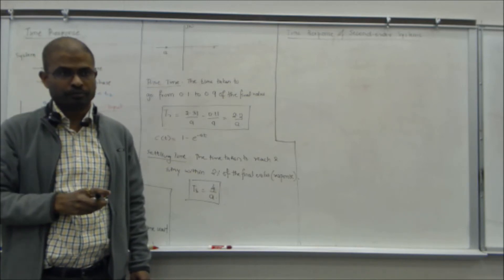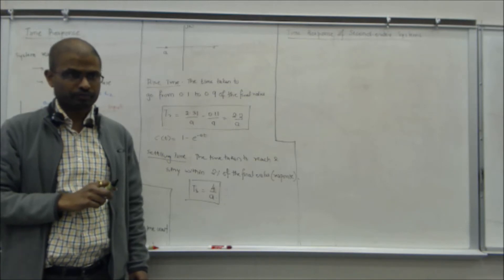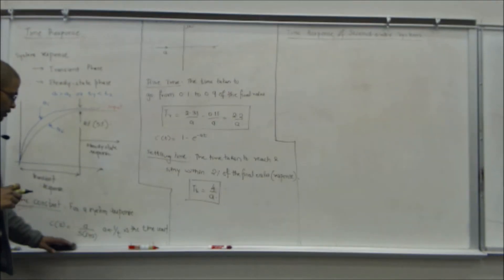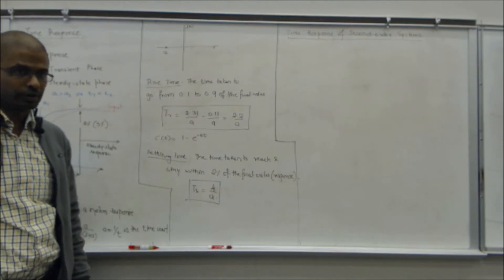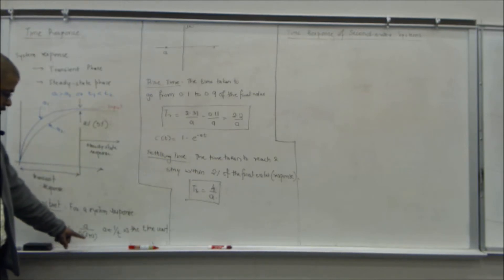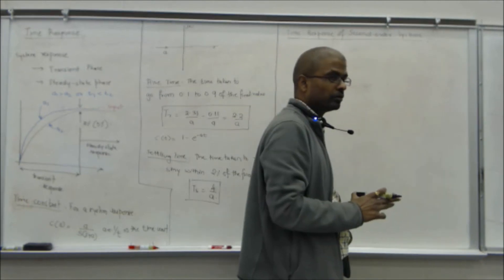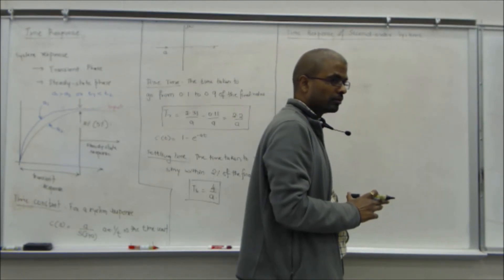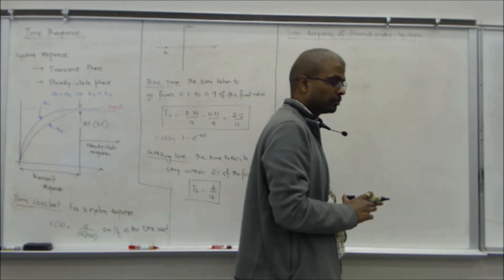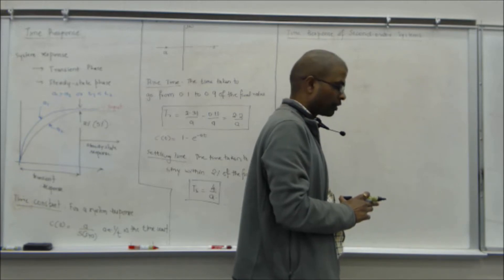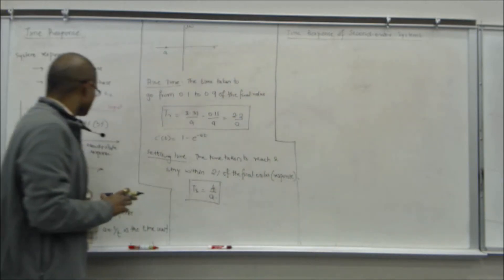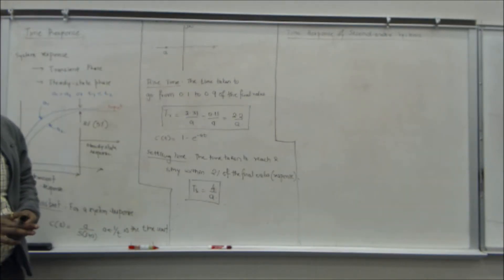If you model the system, how do you define, how does a first order system define? If the input output relationship is a first order differential equation, it's a first order system. With regards to transfer function, the system transfer function will have a first order polynomial in the denominator. A second order system may behave like this sometimes, but a first order system will not behave like a second order system.